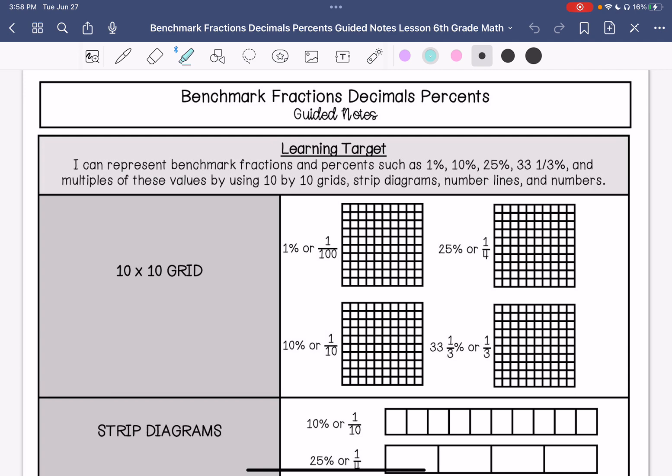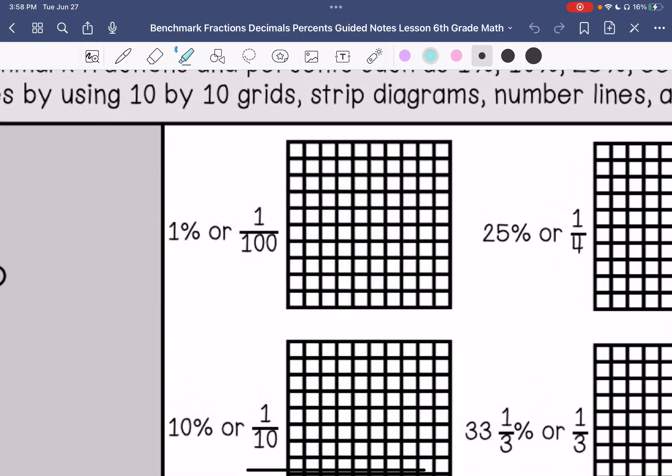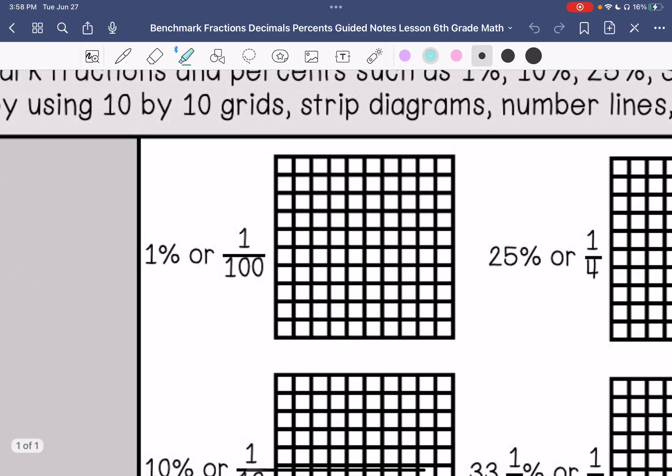So first thing I'm going to do is represent these in a 10 by 10 grid. So if I have 1 percent, that is 1 out of 100, so I'm going to shade 1 square out of 100.